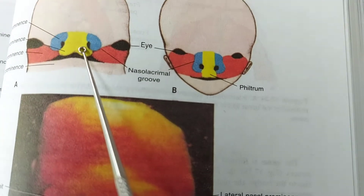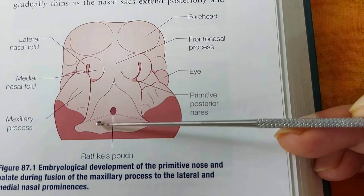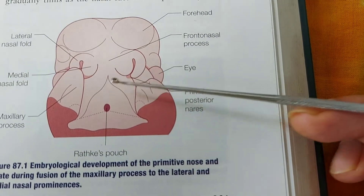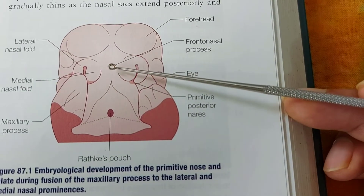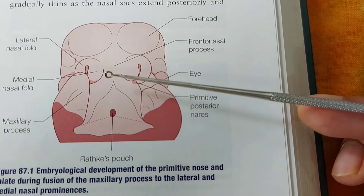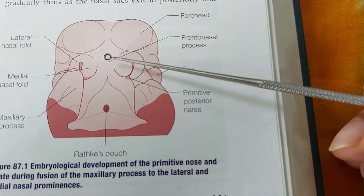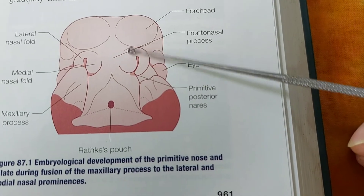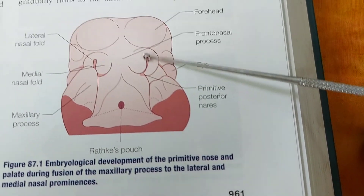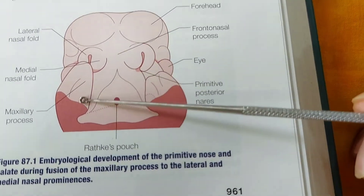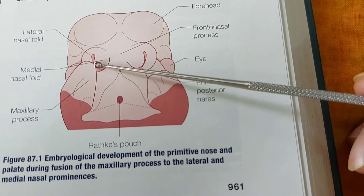For recapitulation: here is the stomodeum — this triangular part is the stomodeum. Above the stomodeum, all the structures are present from where the nasal cavity, nose, and paranasal sinuses are developed. Here is the frontonasal process; the central part is the frontal and this is the nasal process. This is the medial nasal process and this is the lateral nasal process. In between is the nasal pit and nasal sac. This is the maxillary process, which tries to fuse with the medial nasal process.